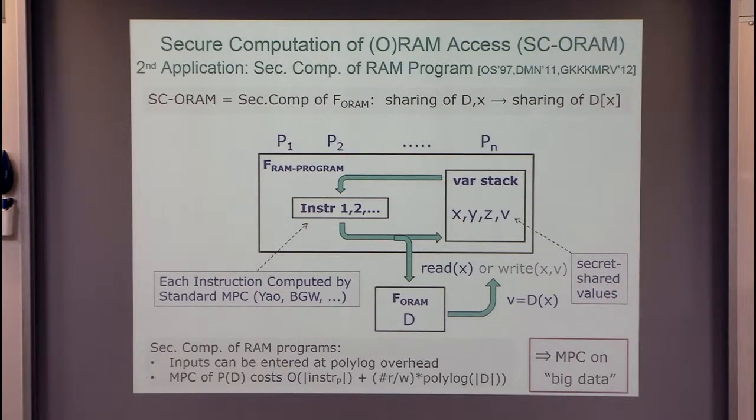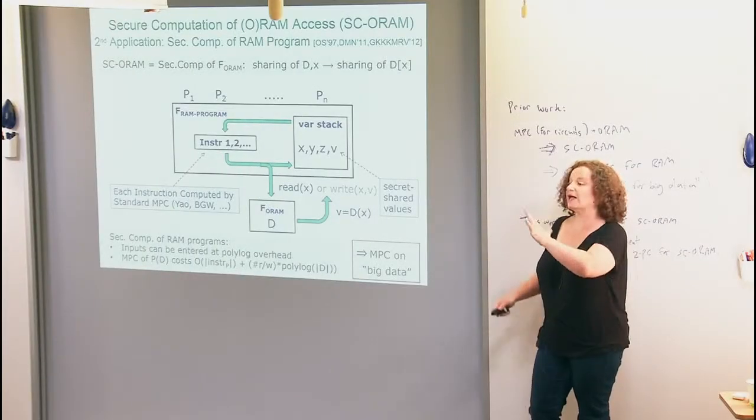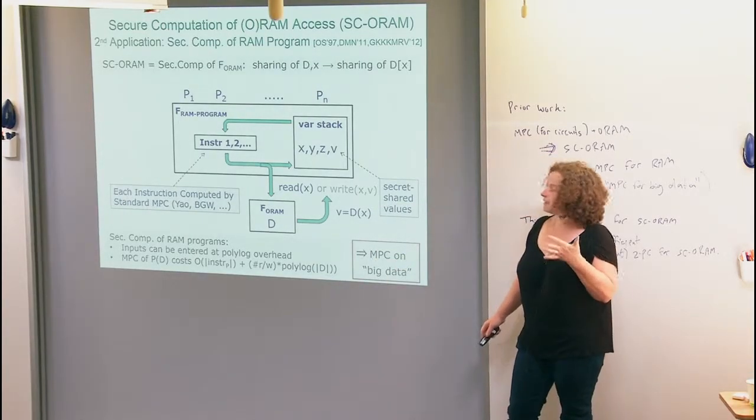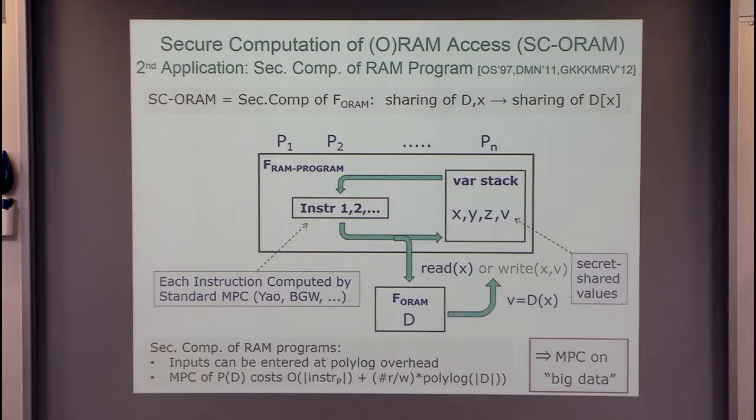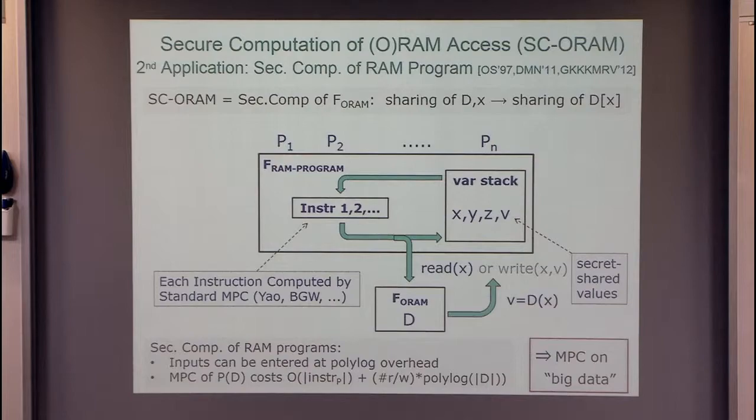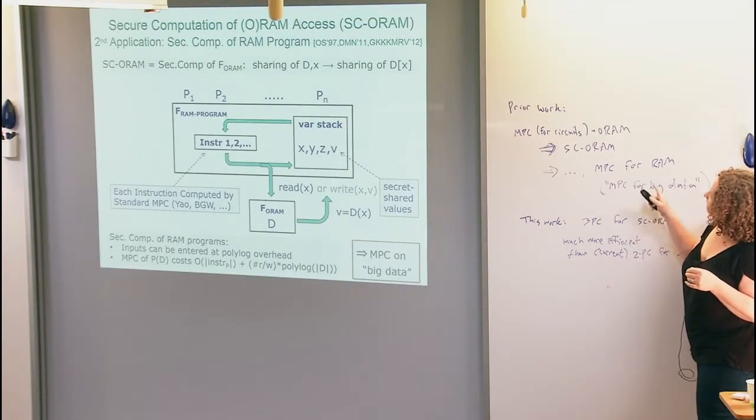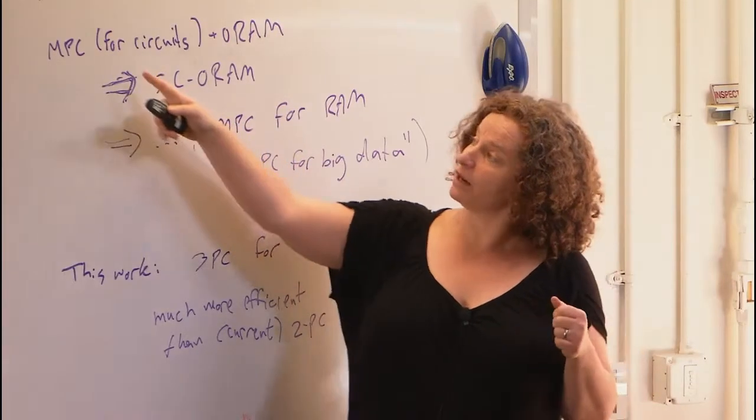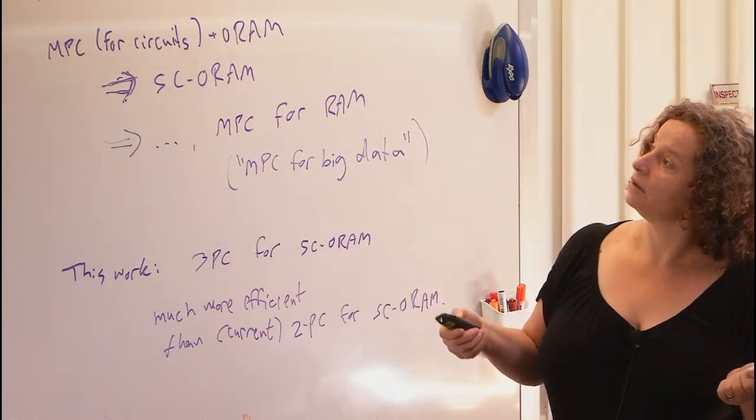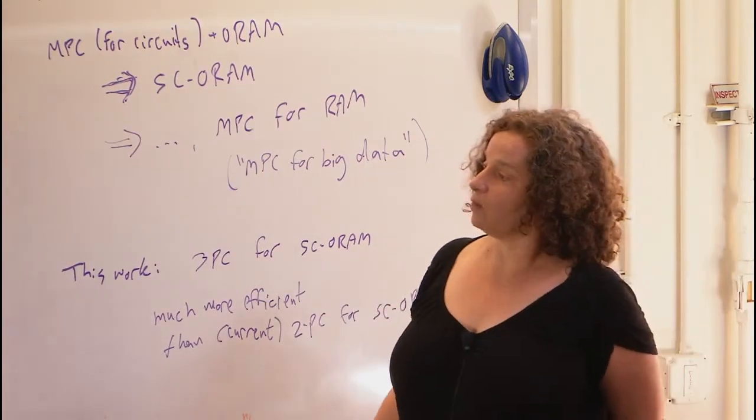One application of secure computation of the ORAM primitive is that it allows you to do secure computation of RAM programs as opposed to secure computation of circuits. A RAM program, random access program, each instruction works on some small number of data items. We can do that part with normal MPC on this small instruction by instruction. When the instruction wants to read or write from memory, we use the ORAM primitive so that the access patterns don't reveal anything.